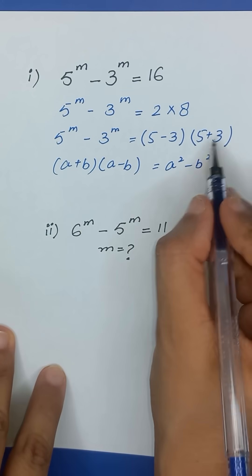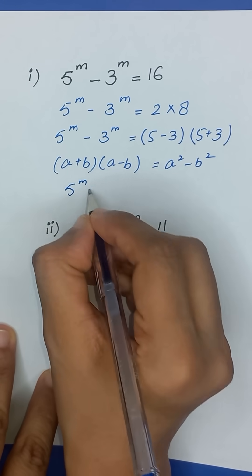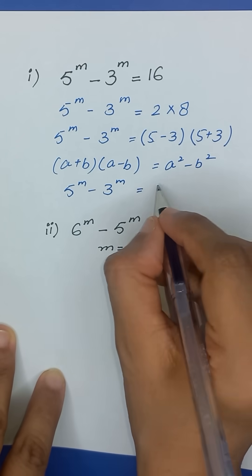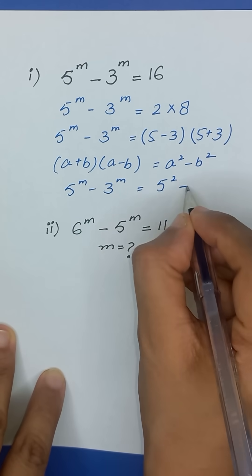So it will become 5 to the power m minus 3 to the power m is equal to 5 squared minus 3 squared.